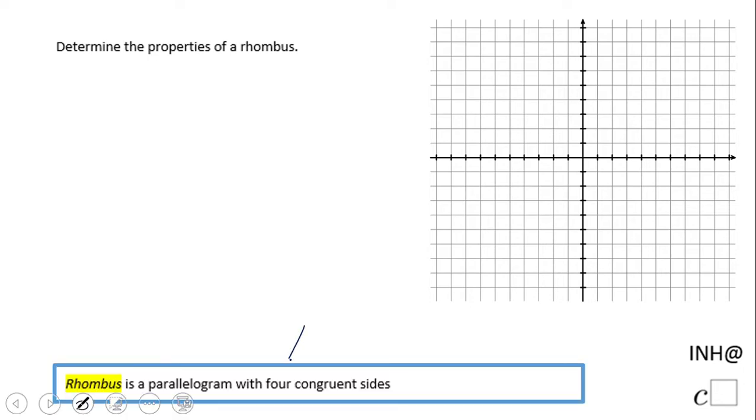Look at here, this is the definition of a rhombus. A rhombus is a parallelogram with four congruent sides. I'm going to use this grid here to draw a rhombus.